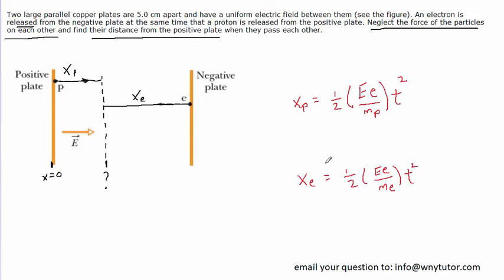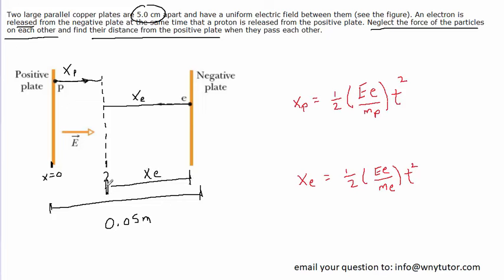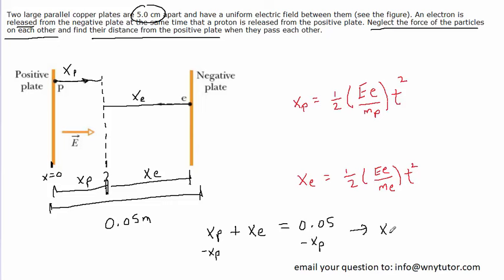The challenge is to solve for x-p given these two equations. From the diagram, the distance from plate to plate is stated in the question to be five centimeters or 0.05 meters. The distance from the electron's starting point to the crossing point is x-e, and from the crossing point to the positive plate is x-p. So from the diagram, x-p plus x-e equals 0.05. Solving for x-e, we subtract x-p from both sides: x-e equals 0.05 minus x-p. We'll substitute this expression for x-e into the electron's kinematics equation.